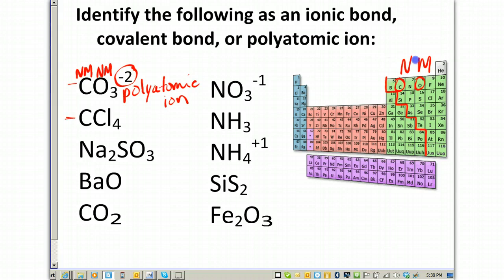CCl4, let me erase my other circles. CCl4 is carbon and chlorine, carbon and four chlorines. Here's carbon, here's chlorine, and because carbon is a nonmetal and chlorine is a nonmetal, each of these is a nonmetal. Nonmetal plus nonmetal is always going to be labeled as covalent.